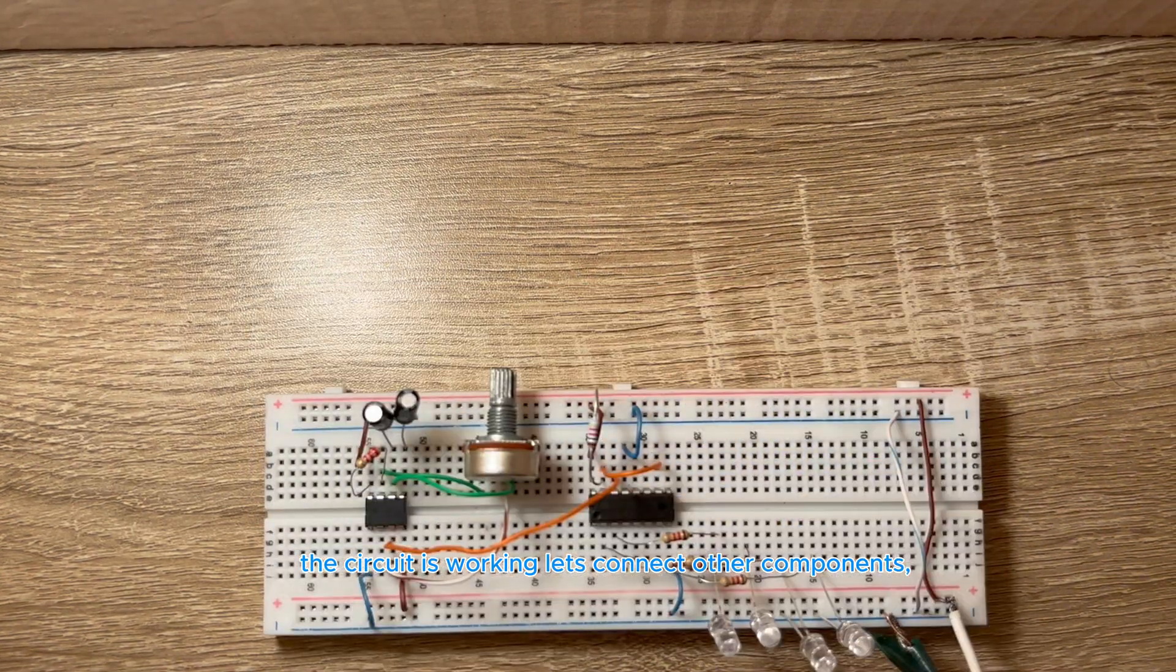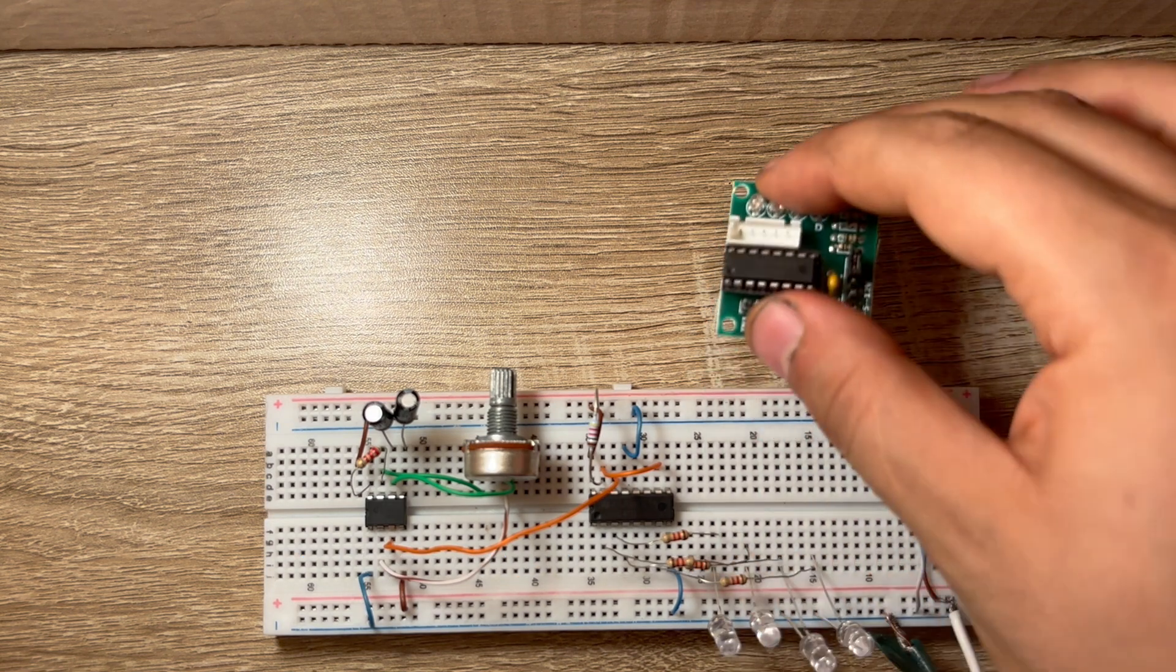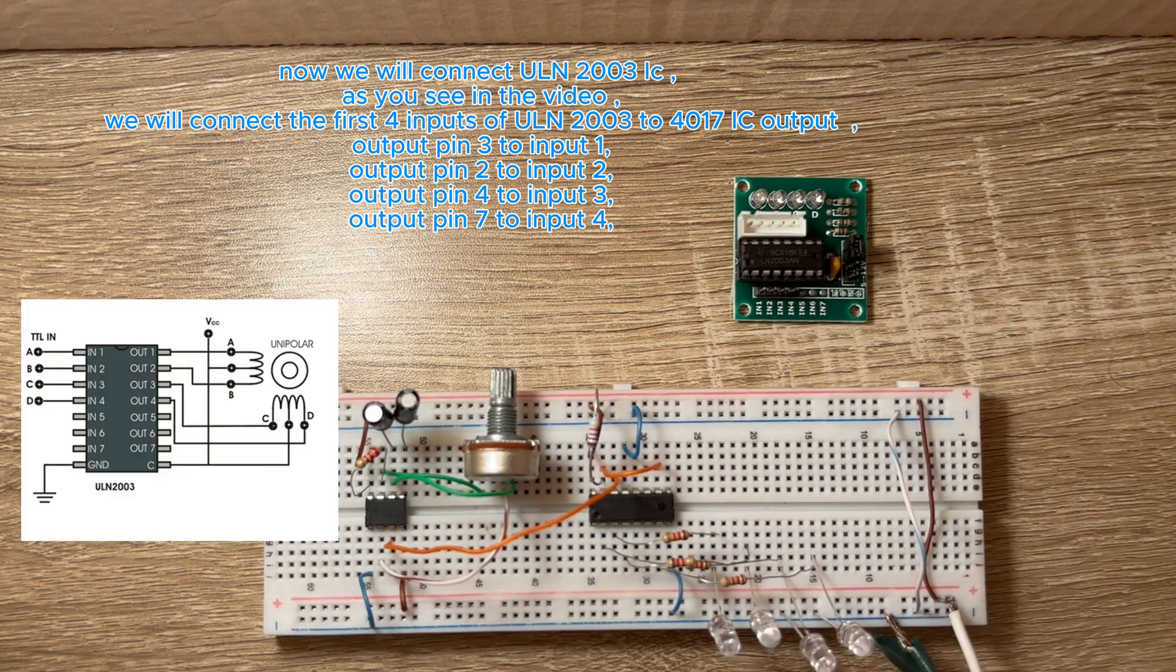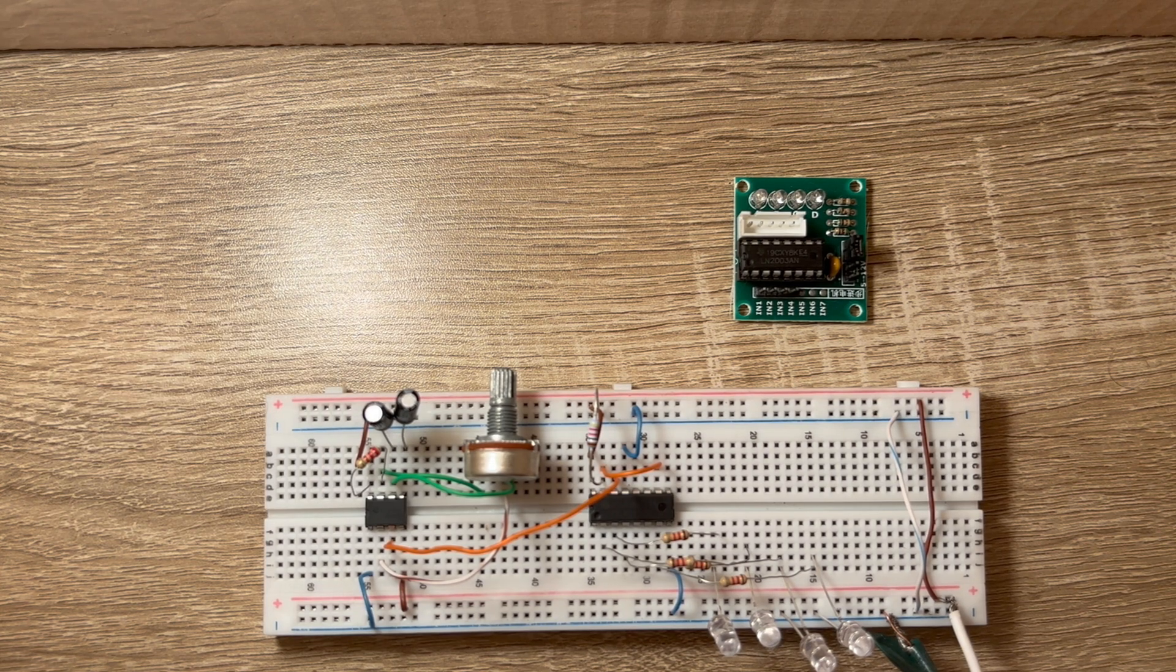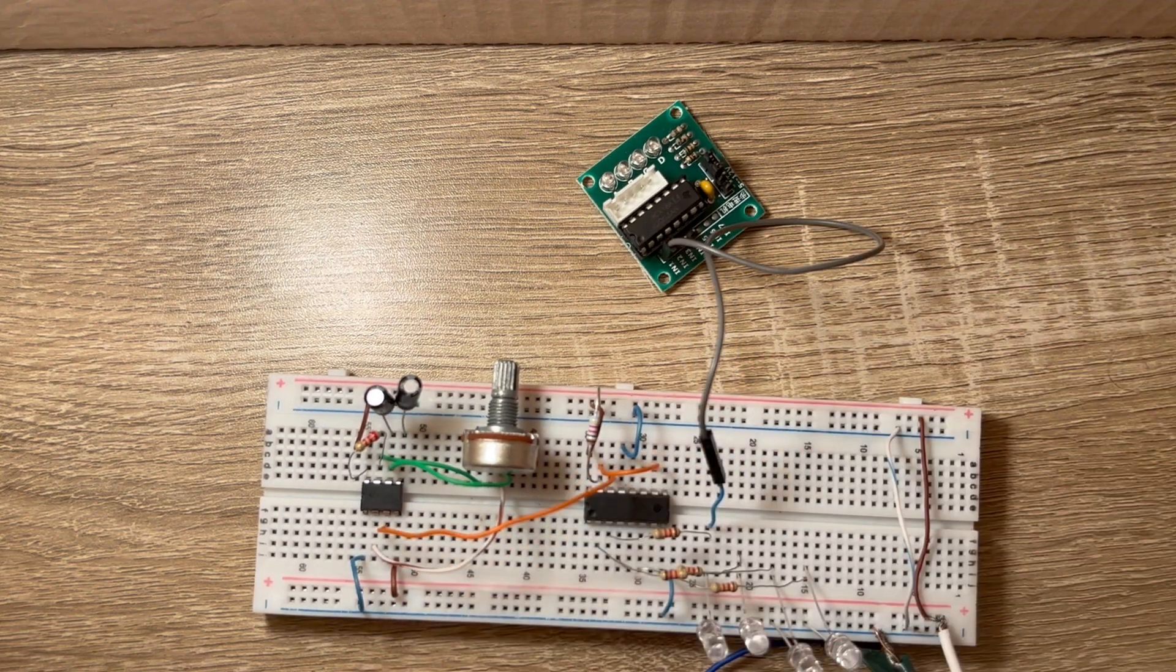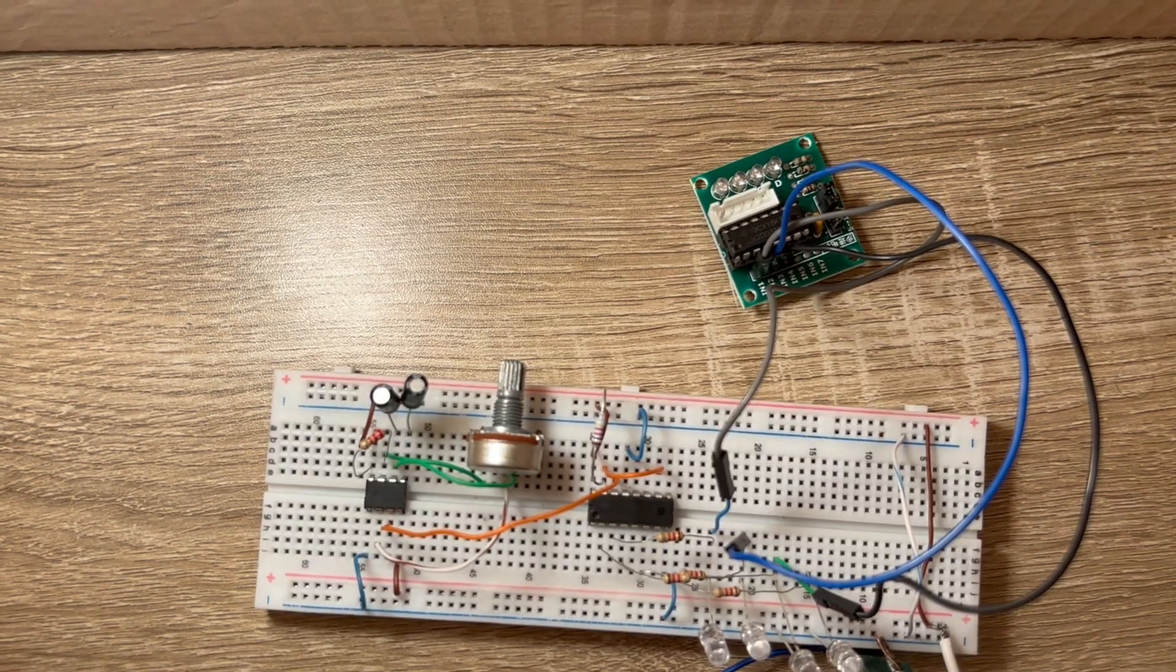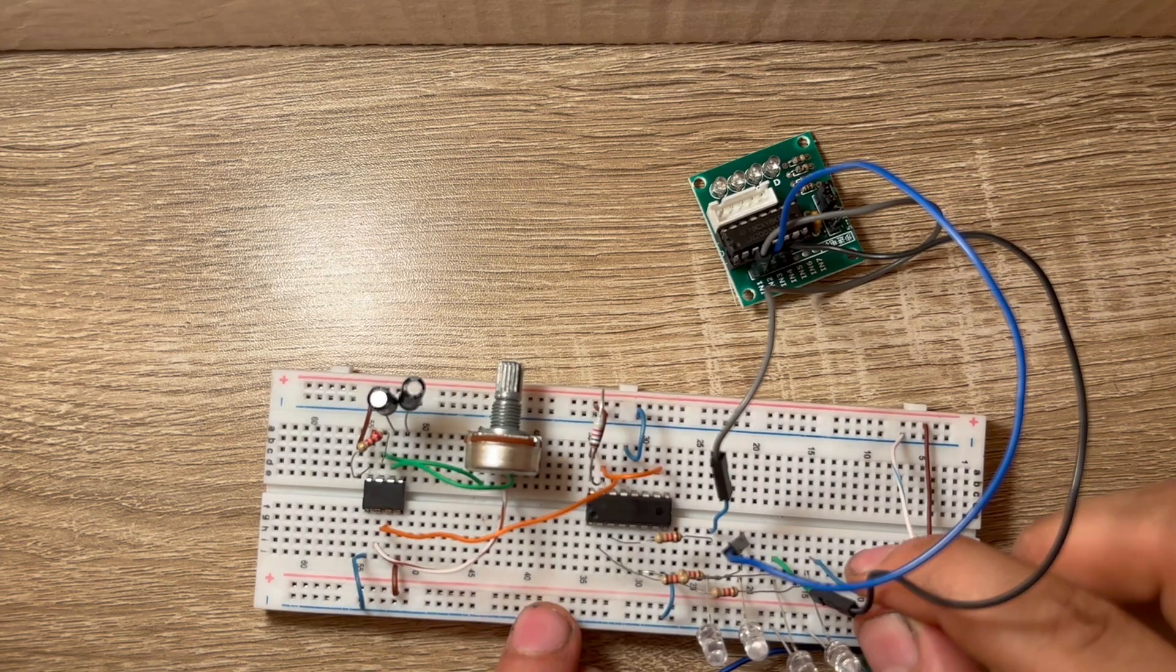The circuit is working, let's connect other components. Now we will connect ULN 2003 IC. As you see in the video, we will connect the first 4 inputs of ULN 2003 to 4017 IC output. Output pin 3 to input 1, output pin 2 to input 2, output pin 4 to input 3, output pin 7 to input 4.